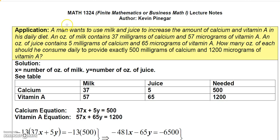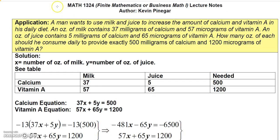Let's start with an application. A man wants to use milk and juice to increase the amount of calcium and vitamin A in his diet. An ounce of milk contains 37 milligrams of calcium and 57 micrograms of vitamin A. An ounce of juice contains 5 milligrams of calcium and 65 micrograms of vitamin A. How many ounces of each should he consume daily to provide exactly 500 milligrams of calcium and 1200 micrograms of vitamin A?